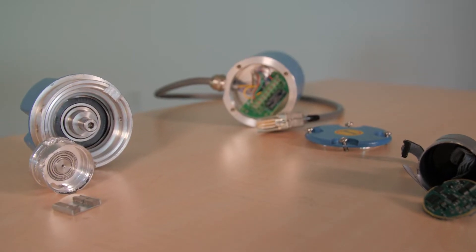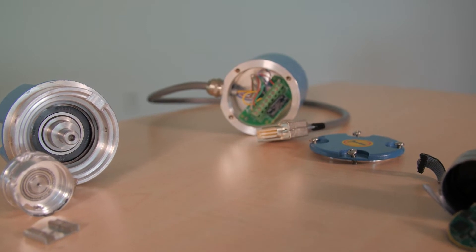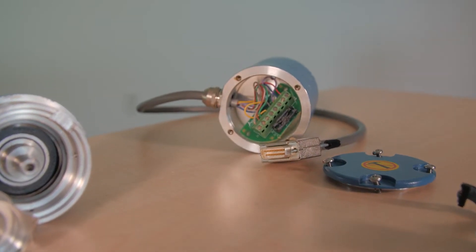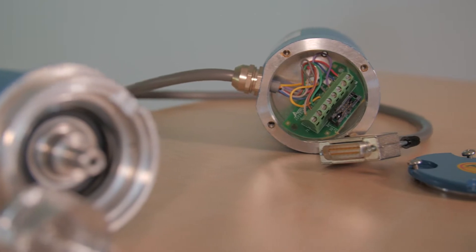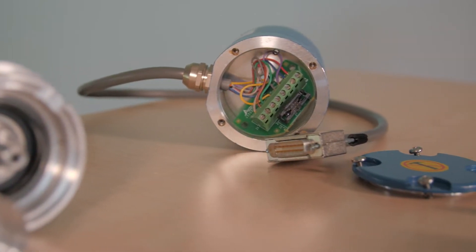So absolute encoder makers have largely gone to a much simpler configuration involving magnets and specialty sensors called Wiegand wires. We tore down one such device made by Nedek Avtron Automation in Cleveland, Ohio. This is an AV-30 model designed for severe duty.